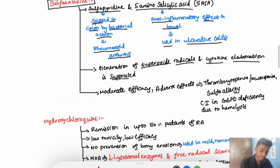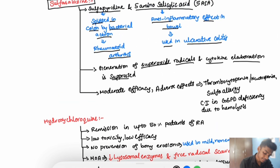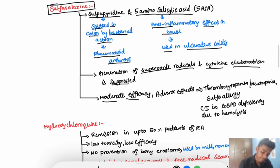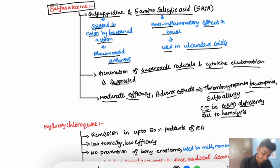Sulfasalazine has moderate efficacy in rheumatoid arthritis. Its adverse effects are thrombocytopenia or neutropenia, and sulfa allergy. It is contraindicated in G6PD deficiency because of the risk of hemolysis.